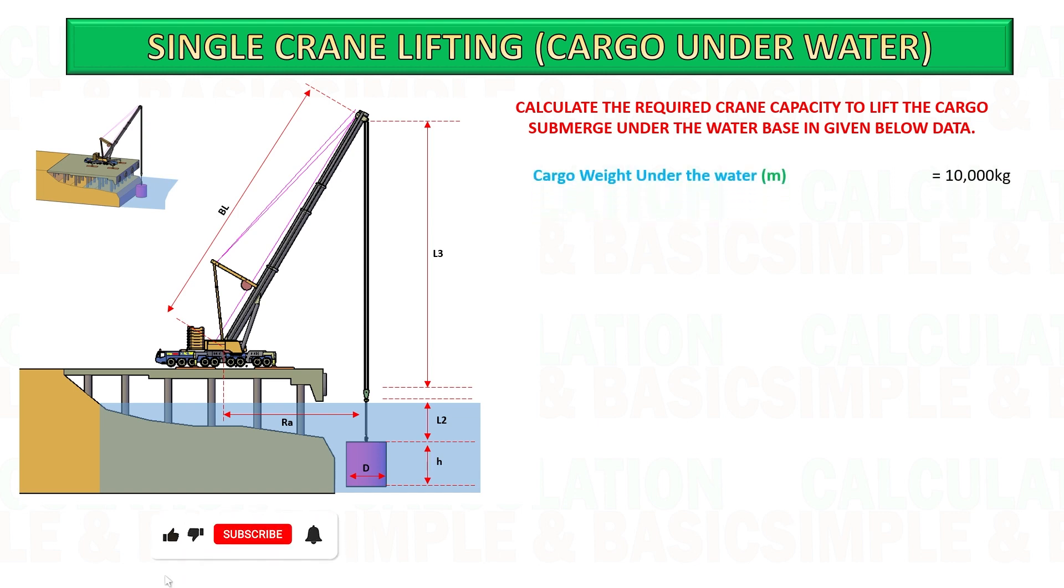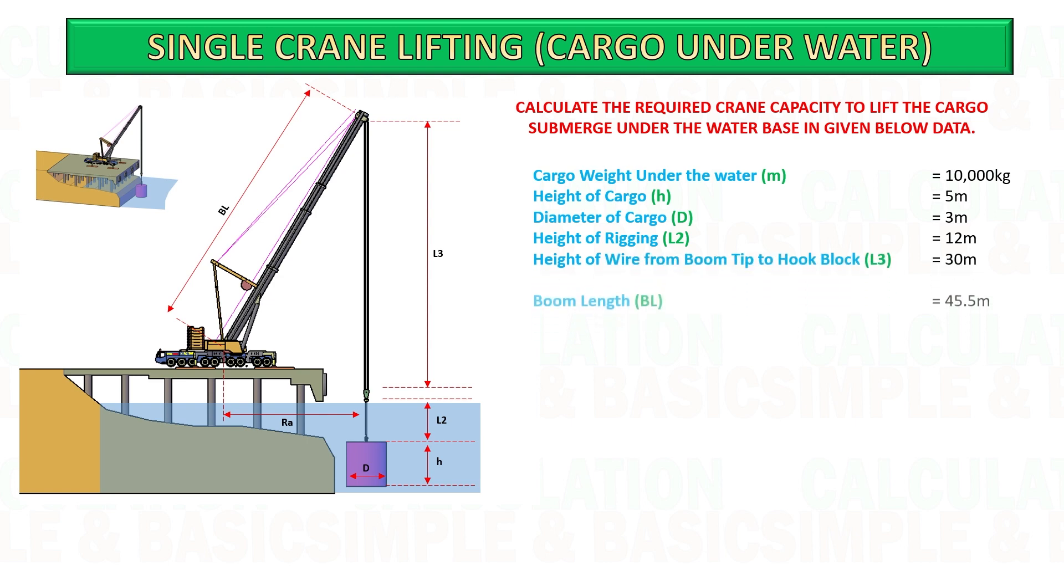Cylinder tank weight under the water is 10,000 kg, with diameter of 3 m and length of 5 m. We are using 26 mm of wire rope weighing 3.25 kg per meter with length of 30 m and 4 part line and all other data mentioned below.